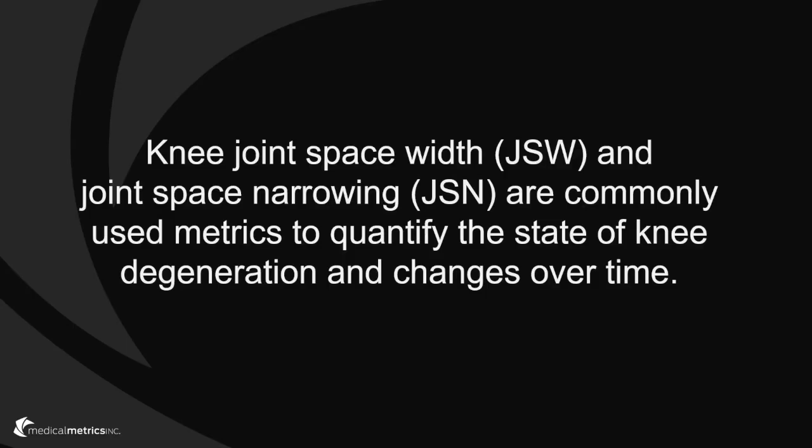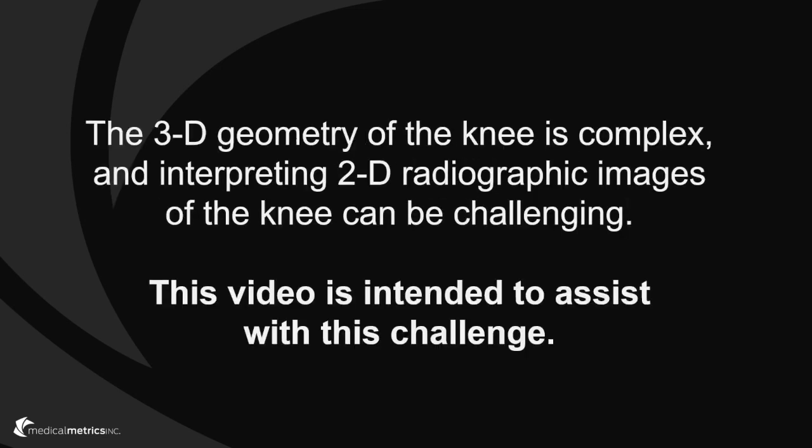Knee joint space width and knee joint space narrowing are commonly used metrics to quantify the state of knee degeneration and changes over time. The three-dimensional geometry of the knee is complex, and interpreting two-dimensional radiographic images of the knee can be challenging. This video is intended to assist with this challenge.